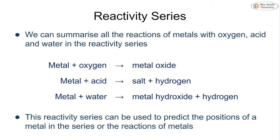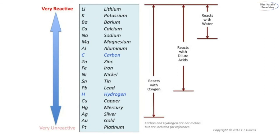To summarise, we can take the reactions of metals with oxygen, acid and water — which all fall under these general reactions — and show this on the reactivity series. As we've already practised, we can use this reactivity series to predict the position of a metal or predict how a metal may react based on where it sits. The series shows lots of metals reacting with oxygen, only some reacting with acids, and only some reacting with water. The most reactive is at the top and the least reactive is at the bottom.